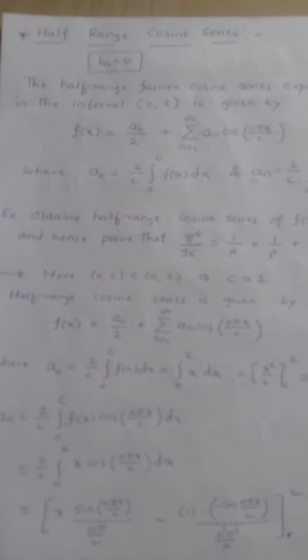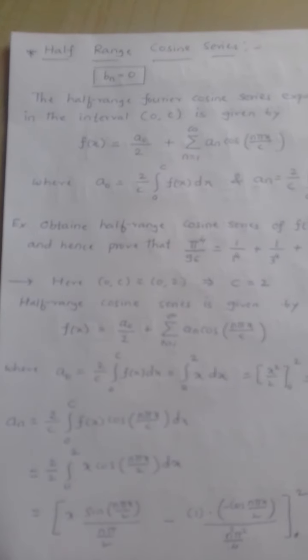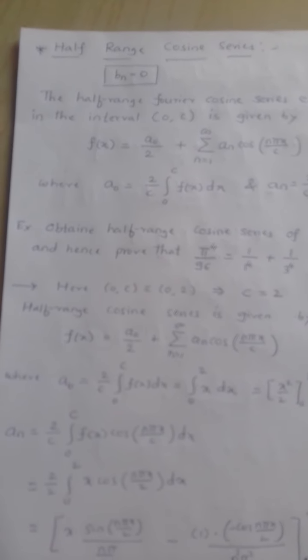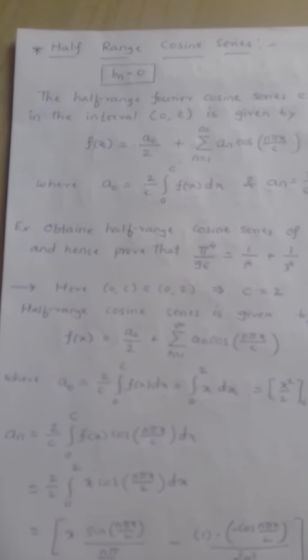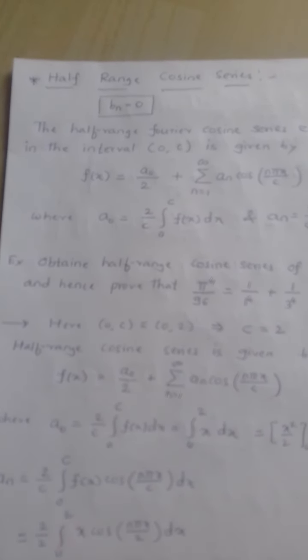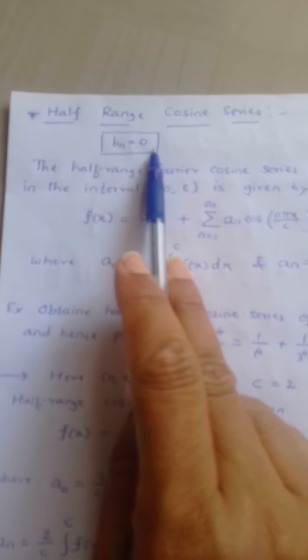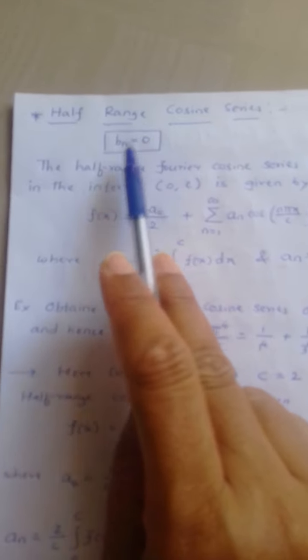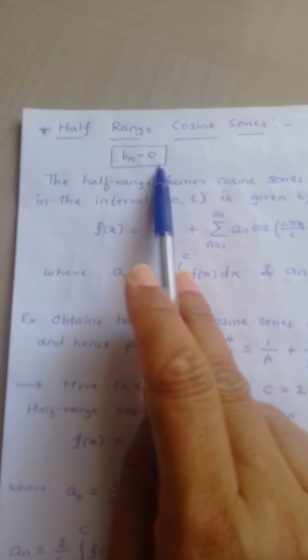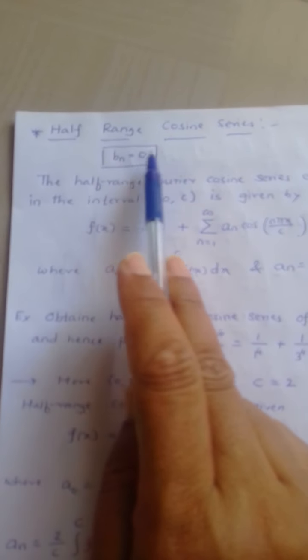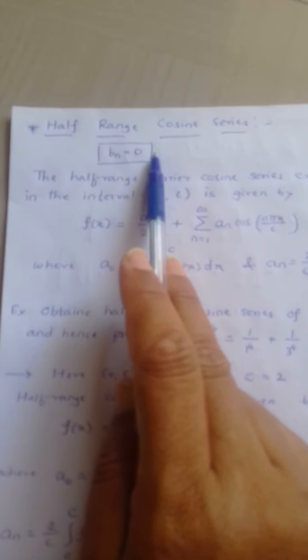Good morning students. We have already seen half range sine series. Now we will discuss half range cosine series. In half range cosine series, the value of bₙ equals 0, meaning only the two Fourier coefficients a₀ and aₙ exist. We will not find the value of bₙ here; bₙ will be 0.